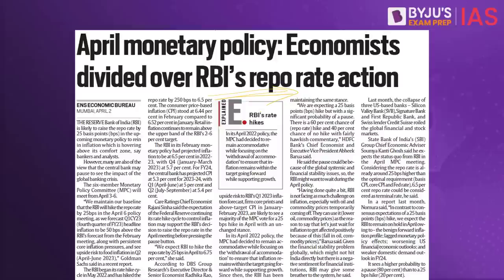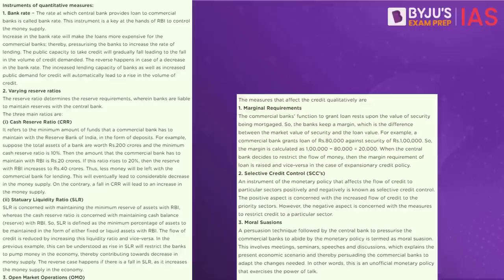Let us try and understand what are these quantitative tools and qualitative tools that RBI has. When we speak about quantitative methods or instruments, they are known as the general tools of the Reserve Bank of India. Quantitative means it is about volumes, numbers, and the quantity of money present in the market. The quantitative tools include: one, the bank rate; two, the reserve ratio which includes cash reserve ratio and statutory liquidity ratio; and three, open market operations.